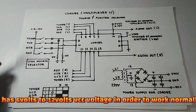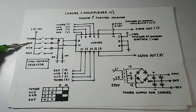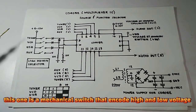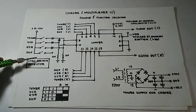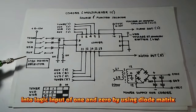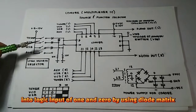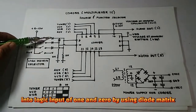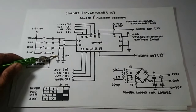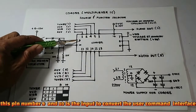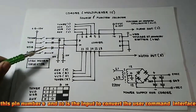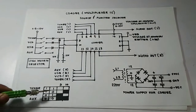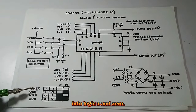It has 6 volts to 12 volts of voltage in order to work normally. This one is a mechanical switch that encodes high and low voltage into logic input of 1 and 0 by using a diode matrix. Pin number 9 and 10 is the input to convert the user command interface into logic 1 and 0.